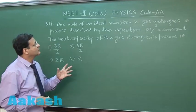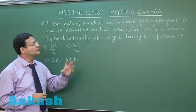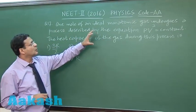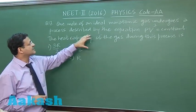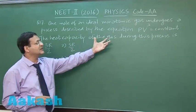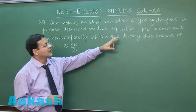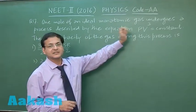Now, this question 17 is based on thermodynamics and polytropic process. It says that one mole of an ideal monatomic gas undergoes a process described by the equation PV raise power 3 is equal to constant. So this is a typical polytropic process in which the exponent capital N is 3.